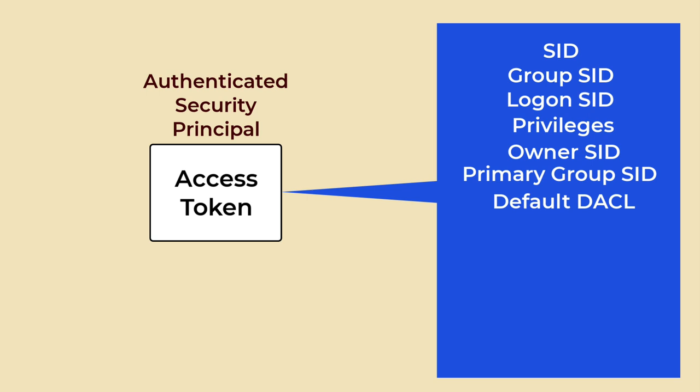The Default Discretionary Access Control List (DACL) is used when the user creates a secure object without specifying a security descriptor; it defines the object's default permissions. Token Source indicates the source of the access token and information about how it was created, such as through a network logon or a local logon. Token Type specifies whether the token is a primary or impersonation token. A primary token represents a user in a process, while an impersonation token represents a user in a thread.